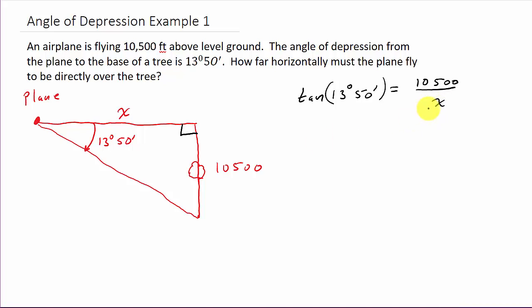Alright. So if I solve for X, well, the X comes up here. If I had an X here and I divided both sides by tangent, the tangent would be down here in the denominator. So that's 10,500 over tangent of 13 degrees 50 minutes. And so we get X is equal to...